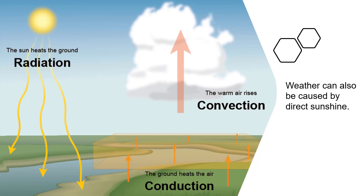Weather can also be caused by direct sunshine. The sun heats the ground in the process of radiation. The ground heats the air through the process of conduction. The warm air rises due to the process of convection. When enough moisture is present, strong convection can lead to the formation of clouds, showers, and even thunderstorms.